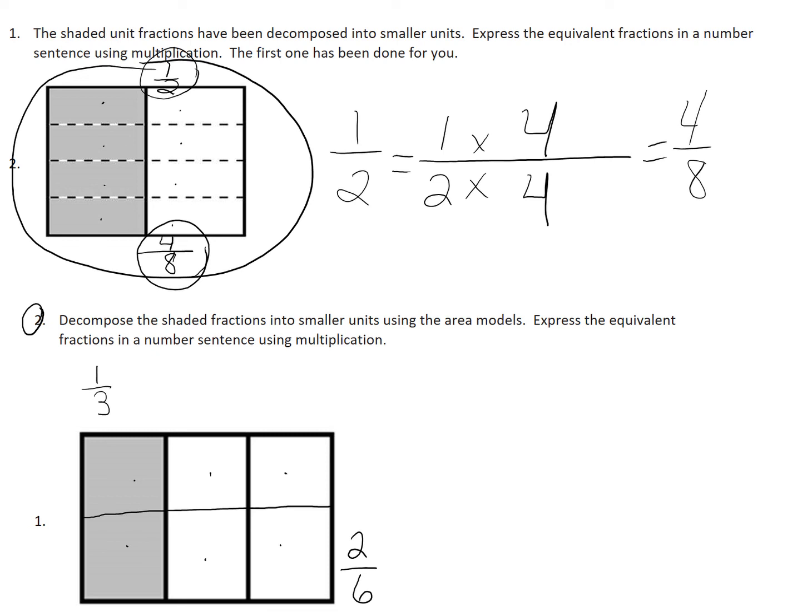So when I go to write my sentence, I started with one third in my story. And then I changed it. So I'm going to do one third times something. And then at the end of the story, I had two sixths. So one times what equals two. And I know one times two equals two. And whatever you do on the top, you have to do on the bottom. So I put two on the bottom as well. And I know it's right because three times two is six. And one times two is two. So it is equivalent.